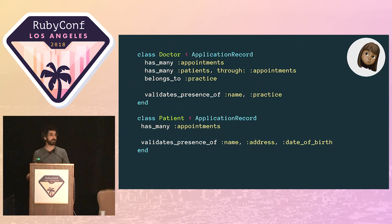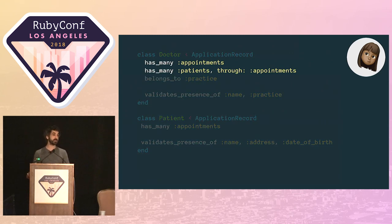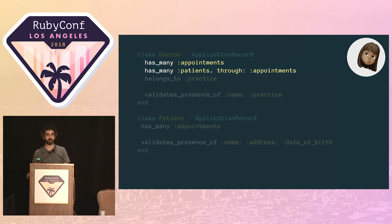She starts by checking the model, looking for clues. The patients association is loaded through the appointments association, and everything else looks as she'd expect. Satisfied she's explored the code enough, she knows exactly what to do next.